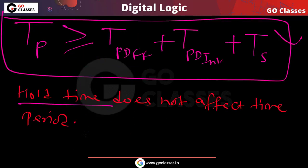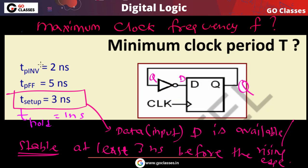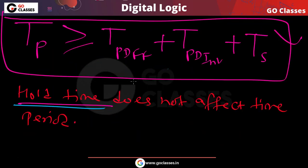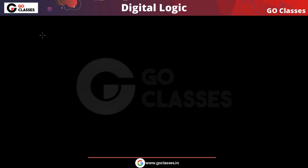So hold time does not affect our calculation. This is a very important point: the clock period is determined only by the propagation delay of the flip-flop, plus the propagation delay of the combinational circuit (here the inverter), plus the setup time of the flip-flop.